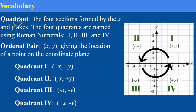So now let's get more specific about the quadrants. These four sections are formed by the x and y-axis, and they're always named with Roman numerals. Please don't use just your standard 1, 2, 3, 4 — they're Roman numeral I, II, III, and IV.